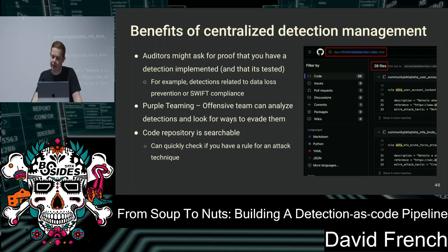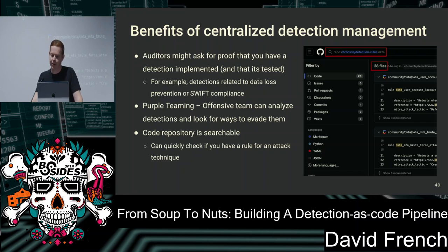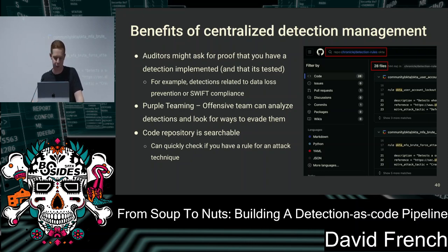Additional benefits of storing rules in a centralized repository: auditors can ask for proof you've got particular detections in place — for a financial institution, detections for data loss prevention or SWIFT compliance — and you can show them rules in the repo without giving access to your security tools. With a purple teaming capability, you can give the red team access to review detection logic and look for ways to evade rules. And the repository is searchable — if you have an emerging threat, you can quickly search to understand your coverage for that platform or technology.